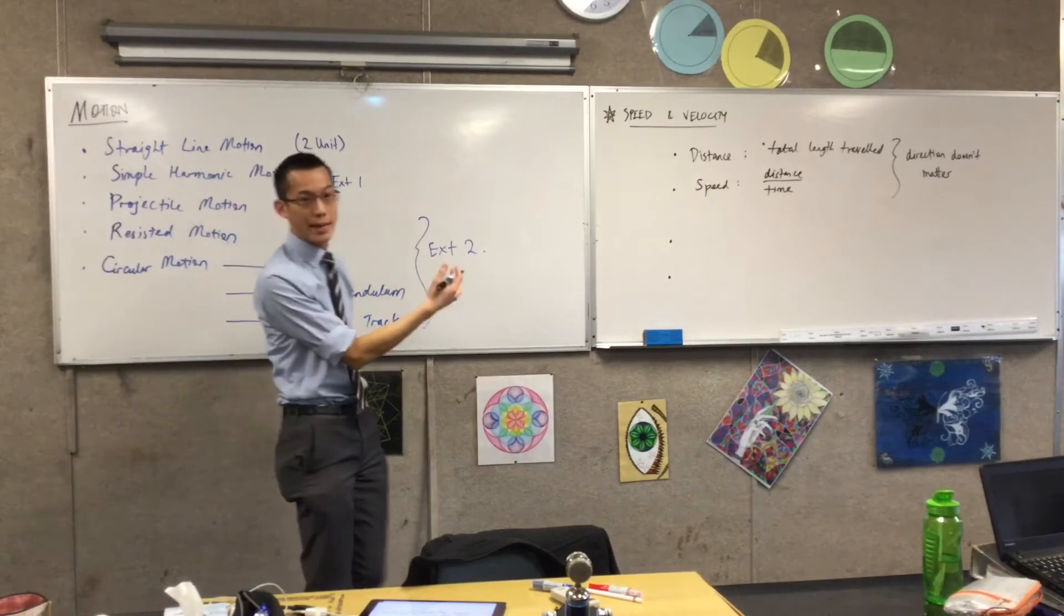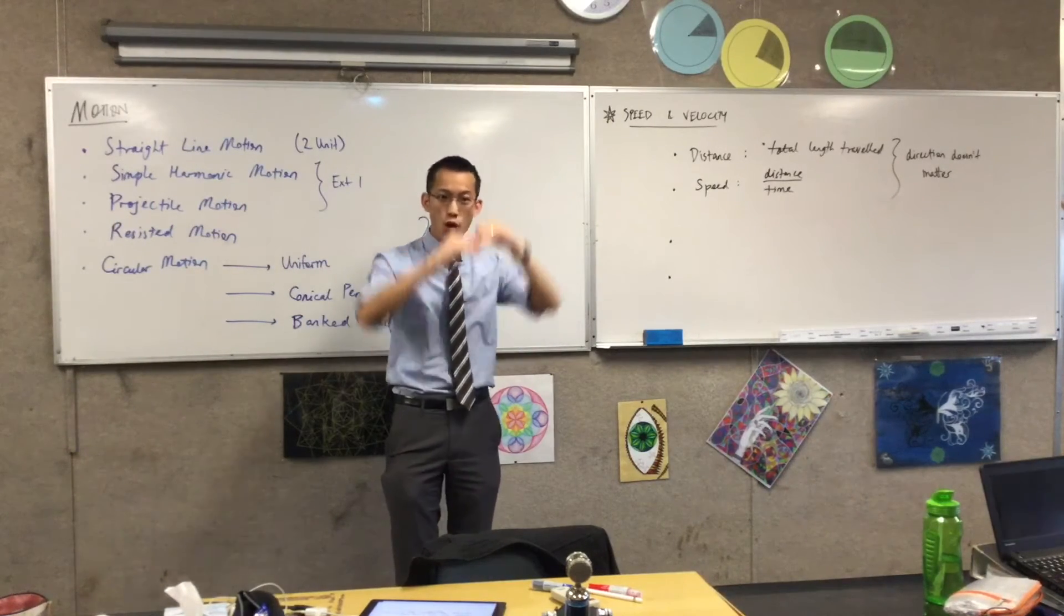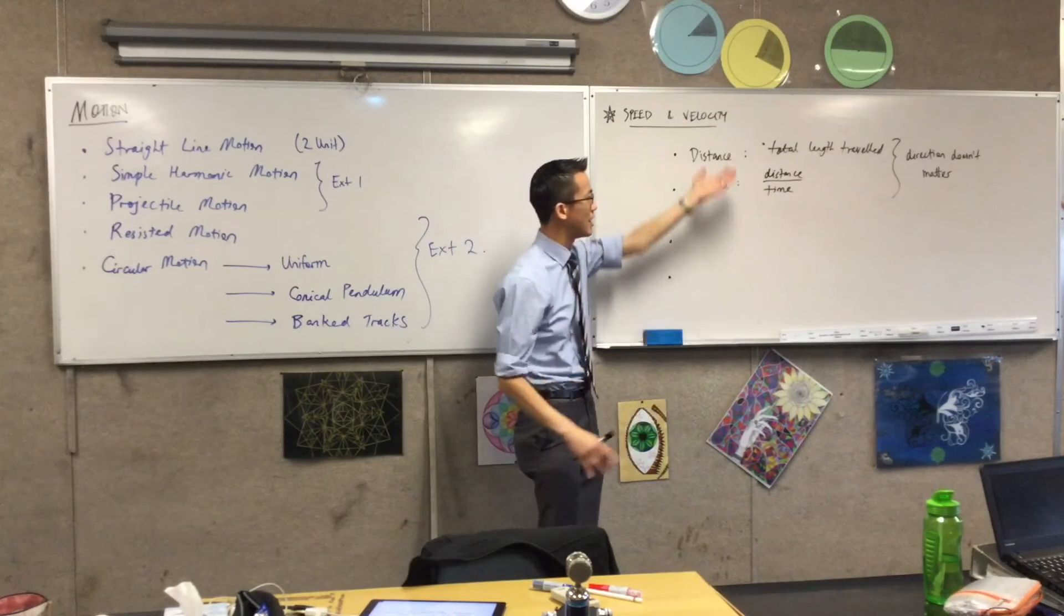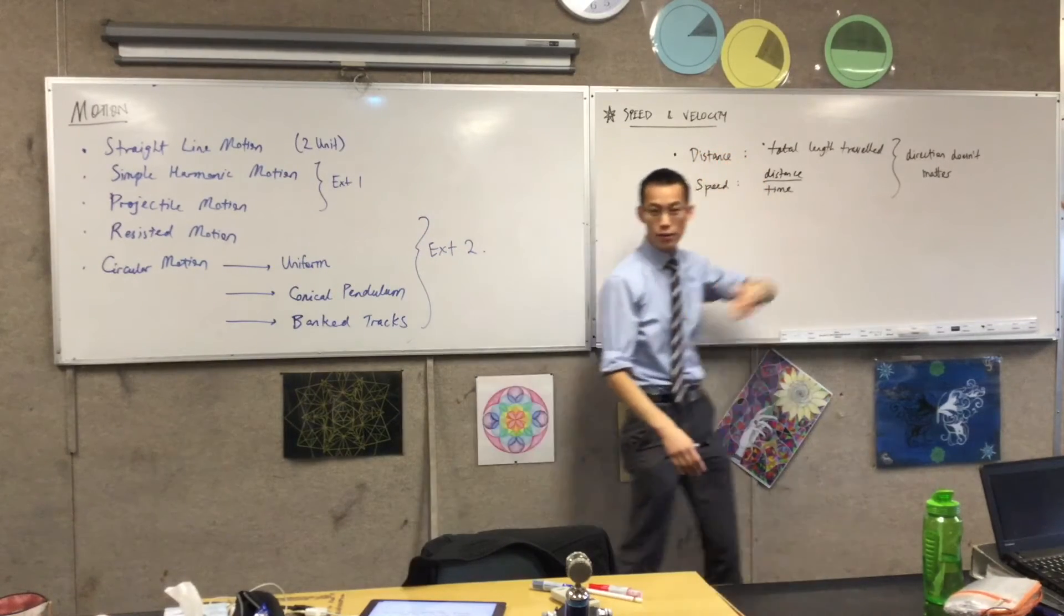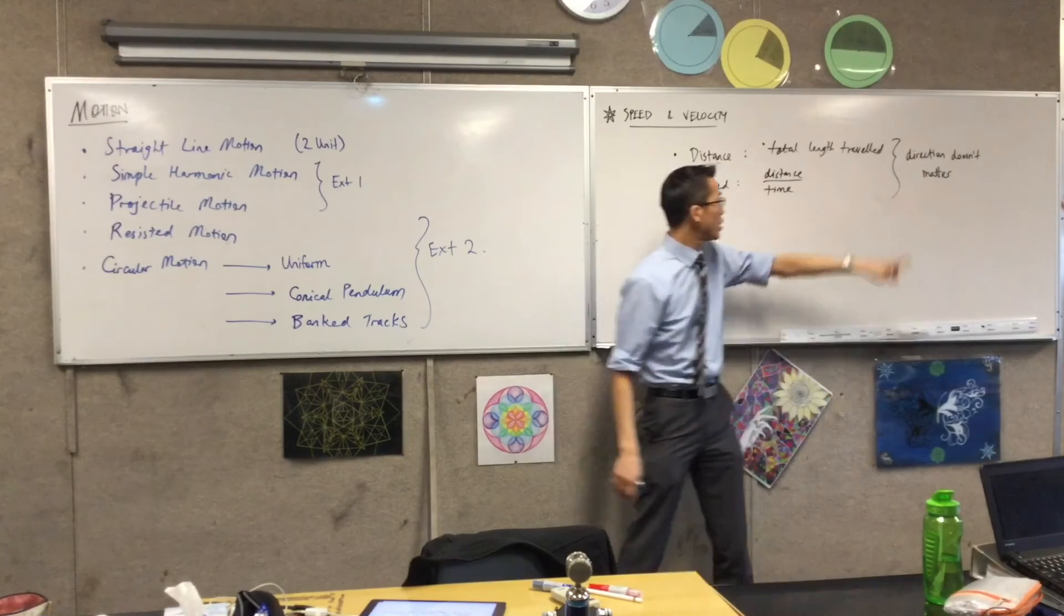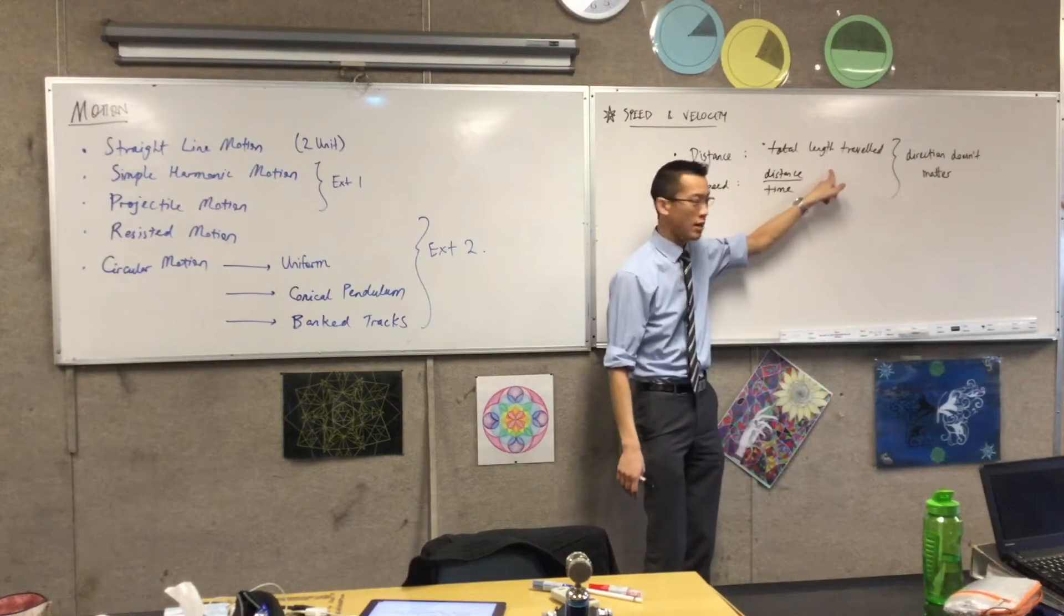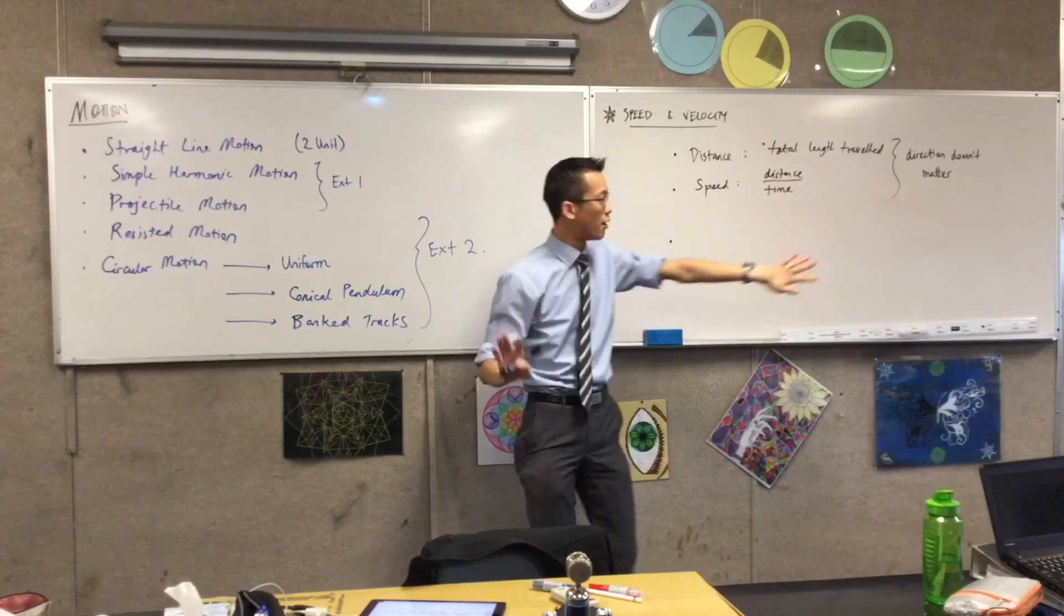Distance, and therefore speed, can be zero or positive. But there's no such thing as negative speed or negative distance. If you've traveled in a direction and then you've traveled back, you've just covered more length. So this is irrespective of direction.